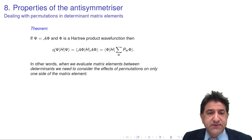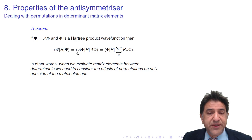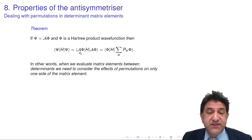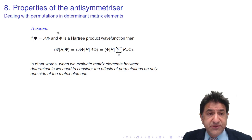The matrix elements look like this: the integral of psi, H, psi, where these are anti-symmetrized products. So we have an anti-symmetrizer times a product, and an anti-symmetrizer times a Hartree product. We have n factorial terms here and n factorial terms there, so this is essentially a square of an anti-symmetrizer. The theorem says we're going to prove that this quantity is equal to the last equality shown.